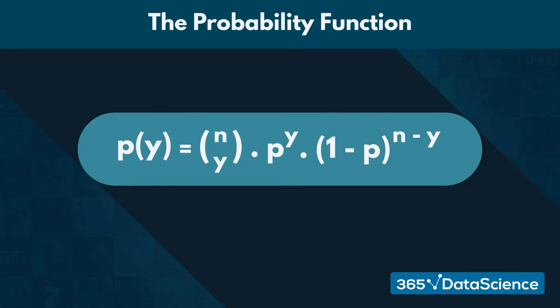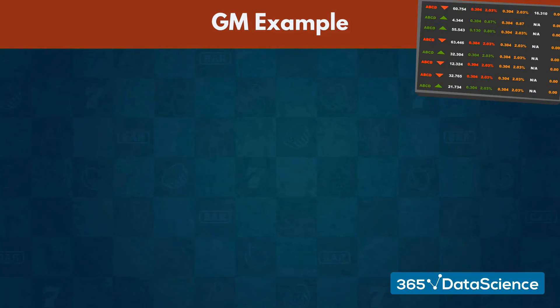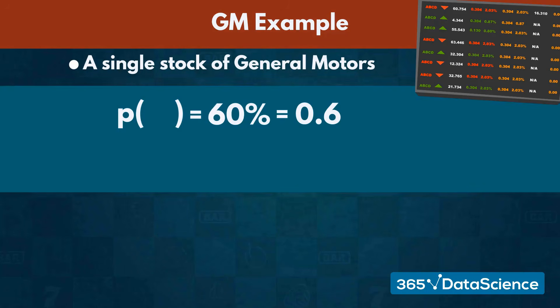To see this in action, let us look at an example. Imagine you bought a single stock of General Motors. Historically, you know there is a 60% chance the price of your stock will go up on any given day and a 40% chance it will drop.